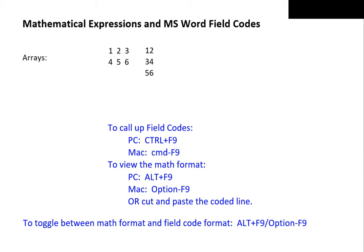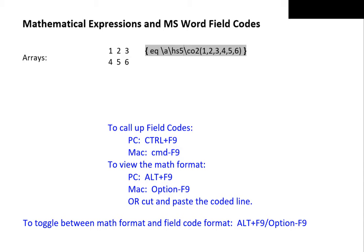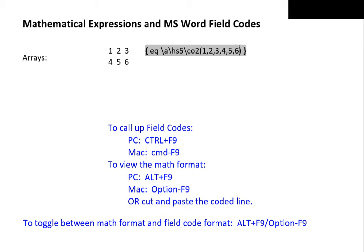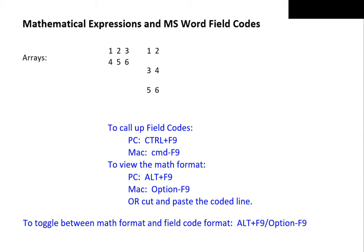The problem with the array right now is that the two columns are so close together that what is supposed to be a two-column array can easily be mistaken for a single column of two-digit numbers: 12, 34, and 56. We can specify the spacing between columns by typing after A: backslash, HS for horizontal spacing — let's say 5 points. Toggle out, and the columns are much more clearly delineated. We can do something similar for spacing between rows using VS. Let's say 10 points — quite generous. We have a yawning chasm between the two rows. Let's bring the vertical spacing back to 0. That's much better.